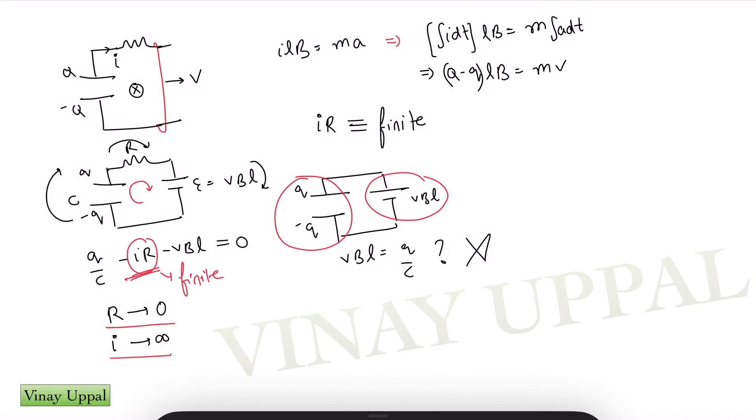And this will be one equation. And the second equation in steady state, when finally we have steady state reached where current is zero, only in that case, we can write V B L is equal to Q by C. And from these two equations, you can solve for the final charge as well as the velocity acquired.